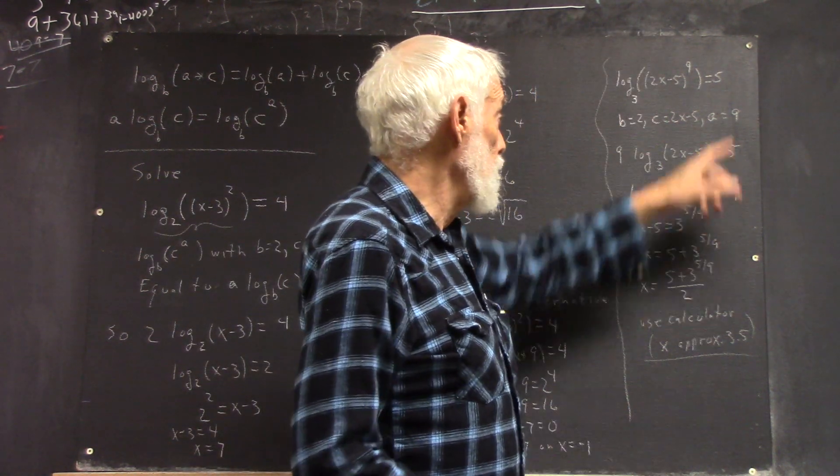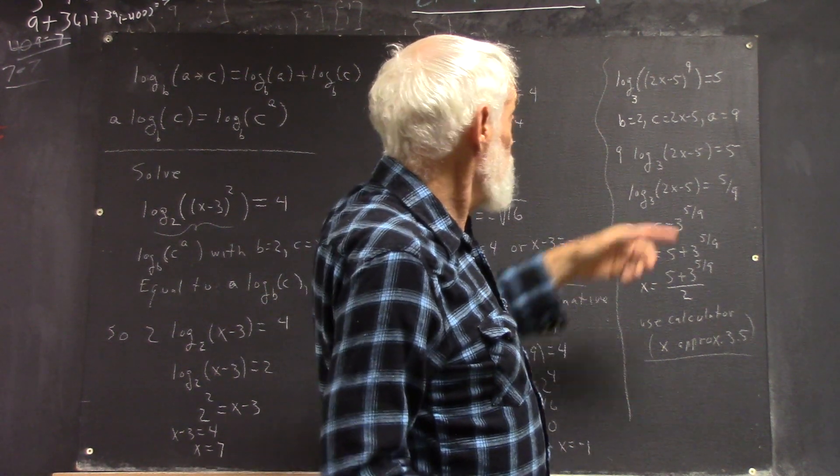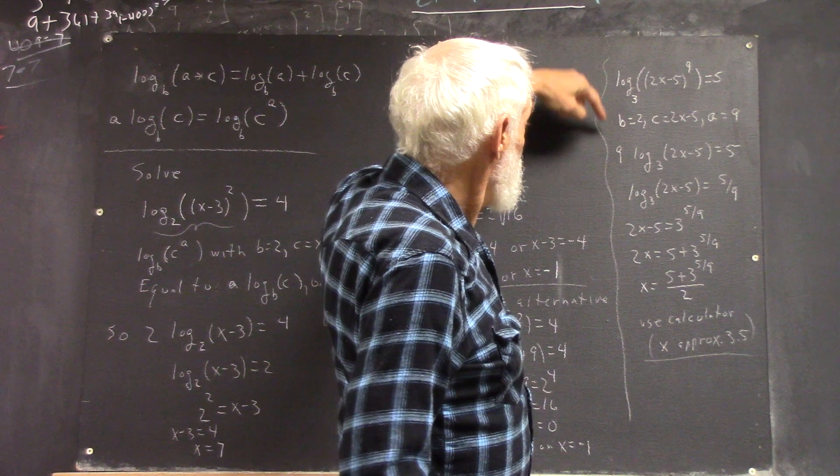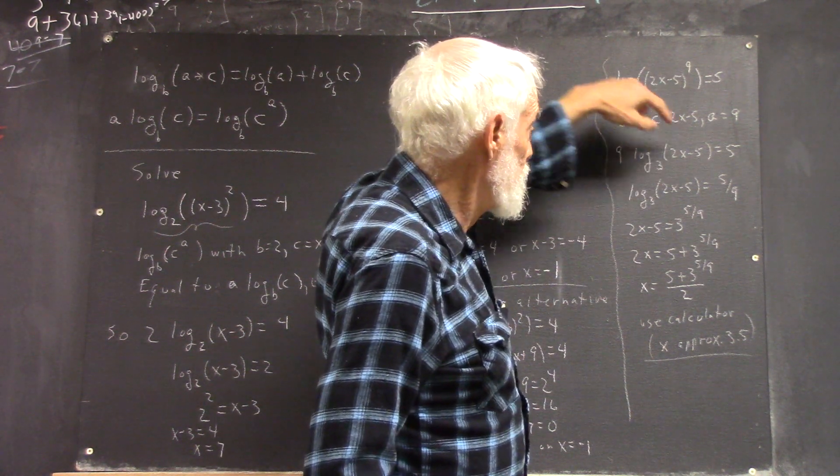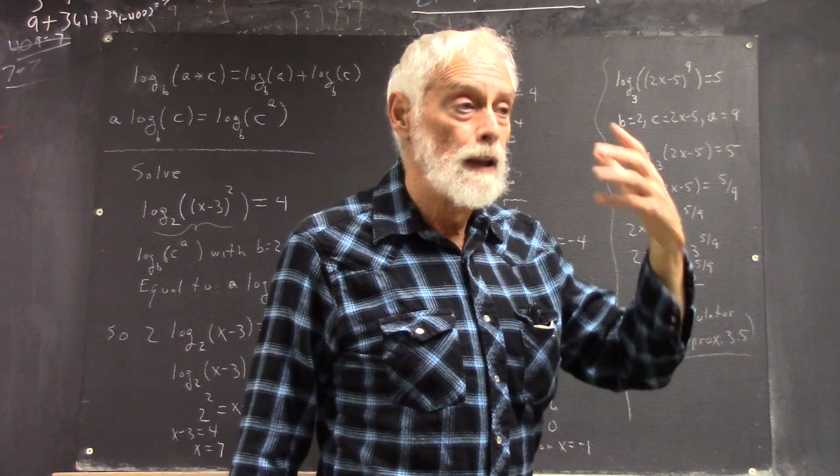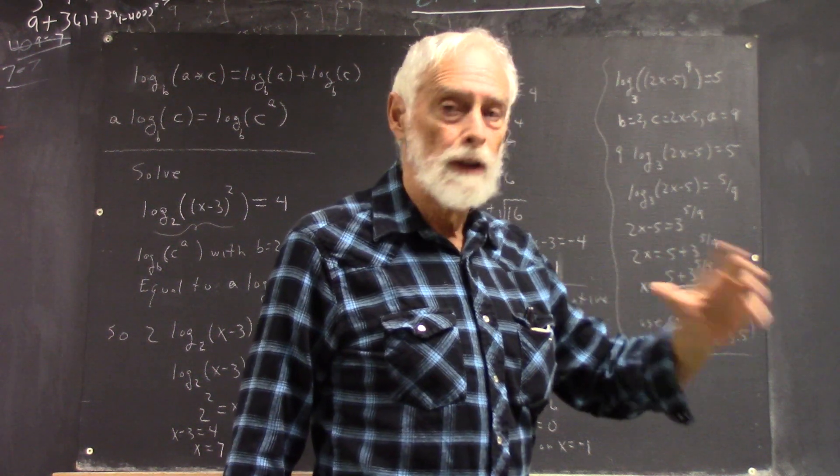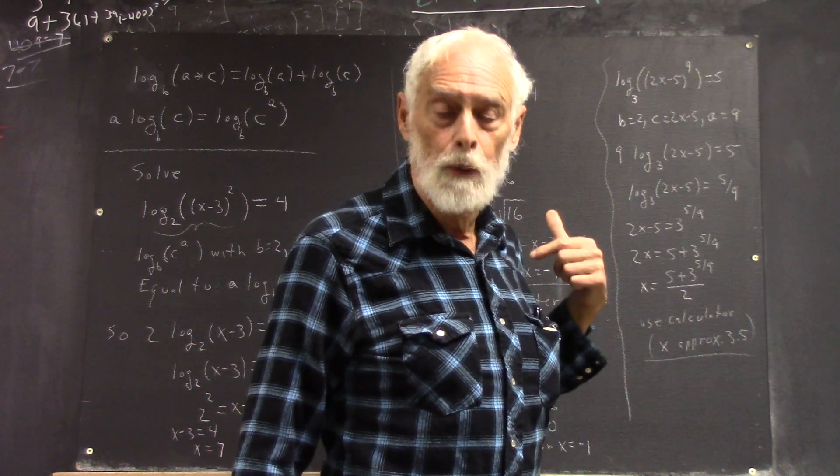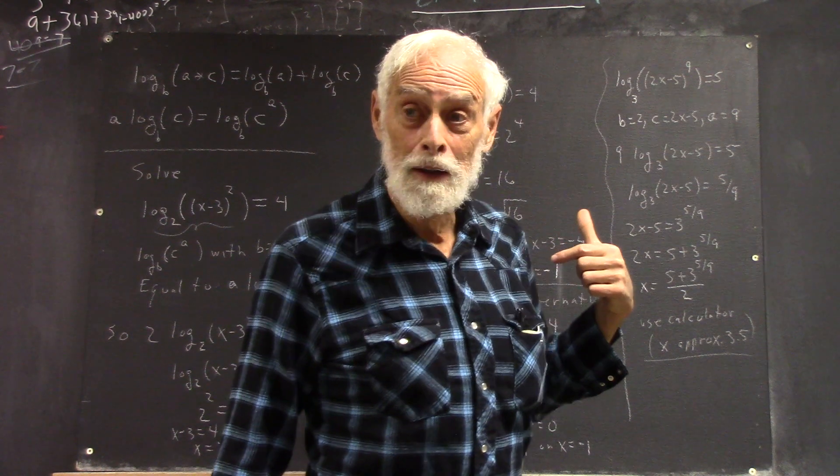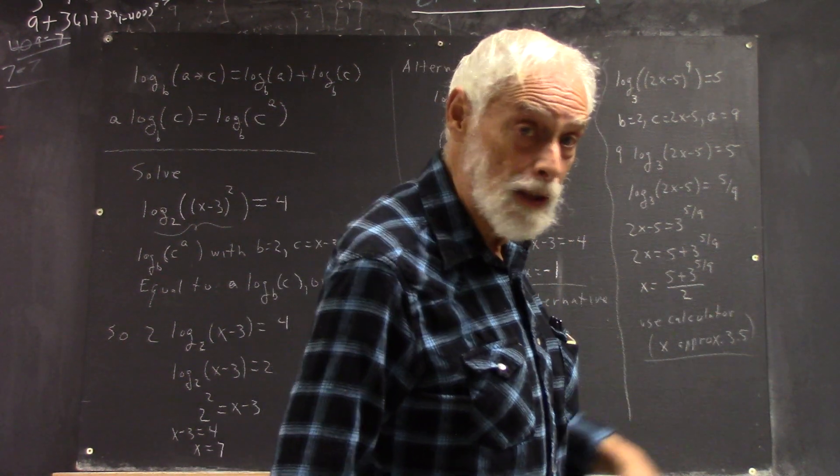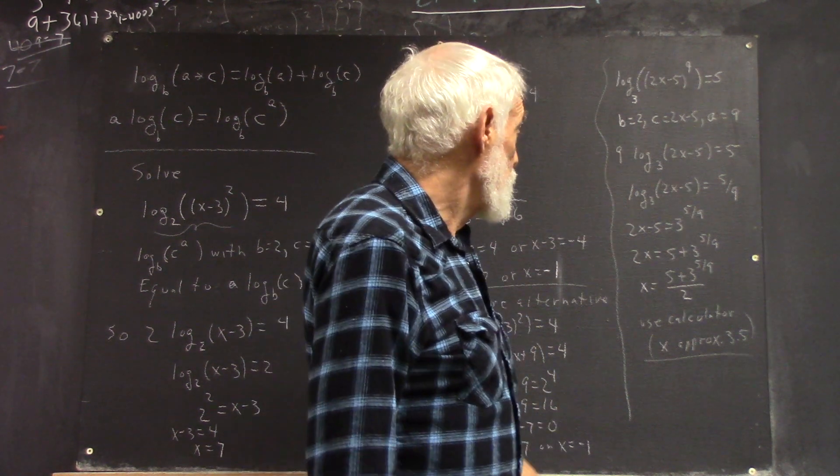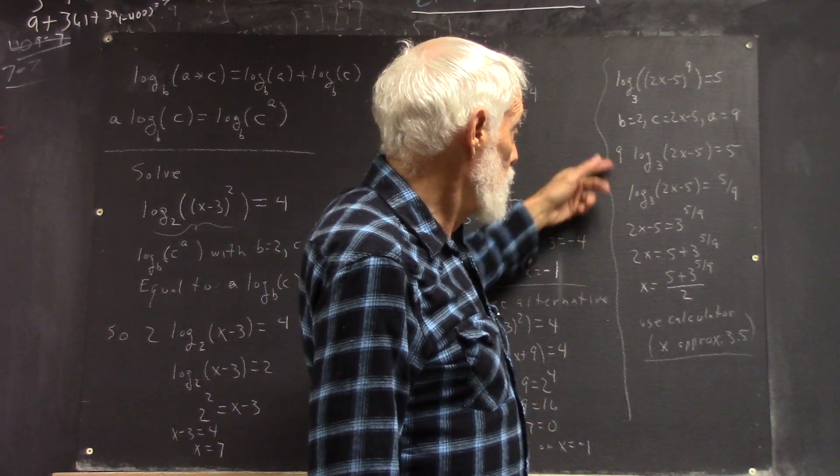Log base 3 of 2X minus 5 raised to the ninth equals 5. You identify your A, B, and C. Here's your B, here's your C, and here's your A. That's going to be A times log base 3 of C, 9 times log base 3 of this. The exponent comes out of the log and goes here, but you've got to be careful and make sure you identify the quantities in the form. Don't do it by superstition. Go back to the log. And on the final, that way if you remember the log and forget the superstition, you've got the log, which is easy to apply. This goes to this and then we solve this in the usual manner.